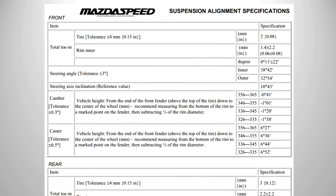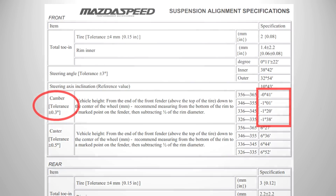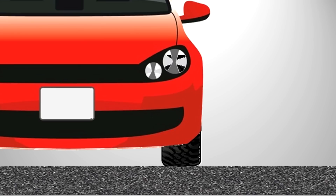Camber is measured in degrees and set by the vehicle or suspension system manufacturer, which can be found in the maintenance manual or technical specifications. For demonstration purposes, the camber angles in the following animations have been exaggerated.